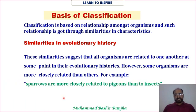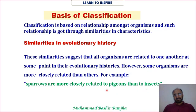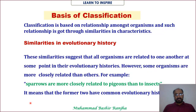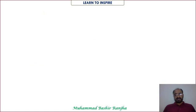For example: sparrows, pigeons, and insects. Sparrows are more closely related to pigeons than to insects. Both sparrows and pigeons are birds sharing the same evolutionary line, so they go in one group. Insects, although they fly, are structurally different from sparrows and pigeons, so insects are placed in a separate group.